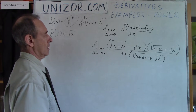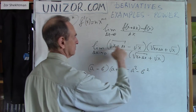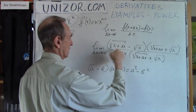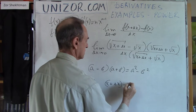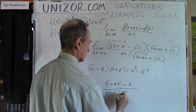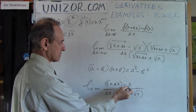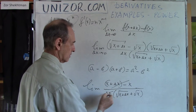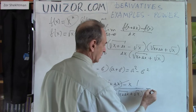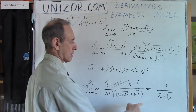What happens? The numerator becomes (a − b)(a + b) = a² − b², where a = √(x + Δx) and b = √x. So the numerator is (x + Δx) − x, and the denominator is Δx times (√(x + Δx) + √x). Since (x + Δx) − x equals Δx, the Δx cancels, leaving 1 over (√(x + Δx) + √x). As Δx goes to zero, this equals 1 over 2√x. That's the derivative.